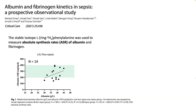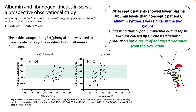In a more recent study, they looked at the rate of albumin synthesis in septic and non-septic patients. You would expect septic patients to have lower albumin levels along with lower production, as shown by the green dots. However, they found that the albumin synthesis rate was similar in the two groups despite lower plasma albumin levels in septic patients. This suggests that hypoalbuminemia in sepsis is not caused by suppressed hepatic production, but as a result of enhanced clearance from circulation.